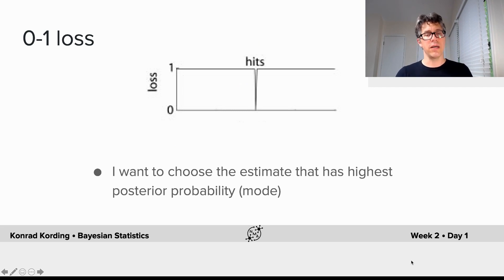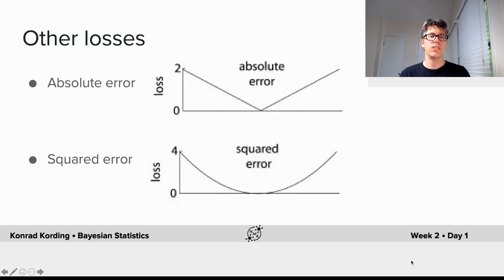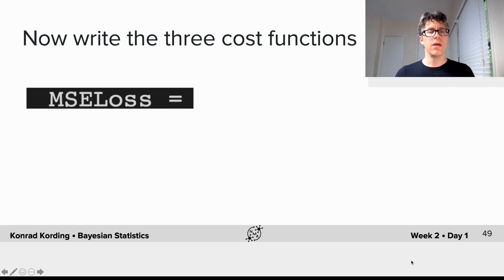In the zero-one loss, it's relatively easy. We get a reward only if we get it right. So the integral takes on a form where only one point matters in the entire integral. Therefore, we want to go for the highest posterior probability, which is the mode. There are other losses: absolute error, squared error. Let's see what the predictions are in those different cases.